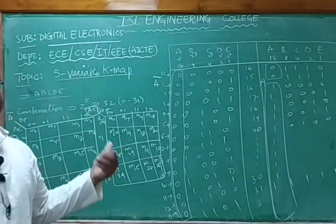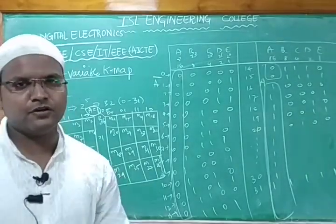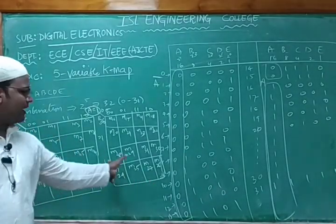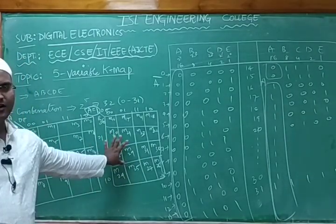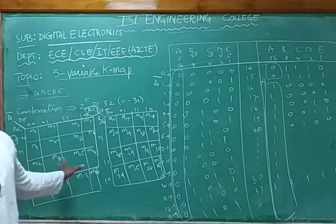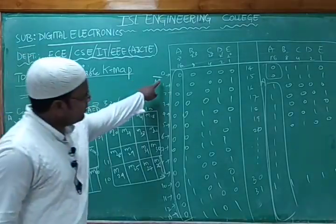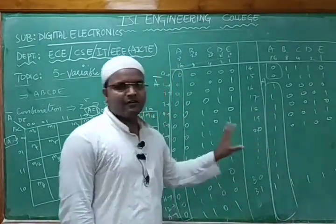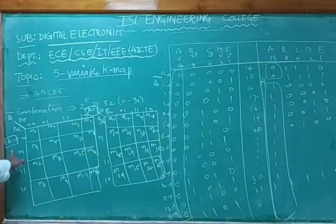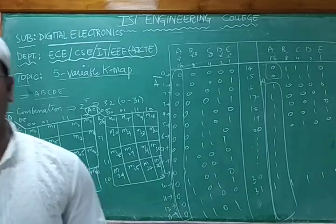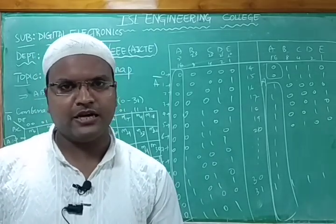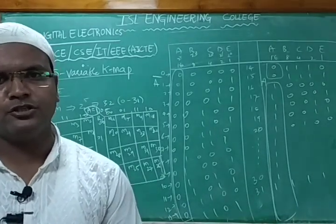When a question gives minterm values like 0, 16, 19, 20, 25, 30, 31, we solve it by designing two separate four-variable KMAPs. The first covers minterms 0 to 15 with A=0, and the second covers 16 to 31 with A=1. By drawing like this, all bits are covered and the five-variable KMAP problem can be solved.